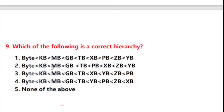Next question: which of the following is the correct hierarchy in computer memory? Answer is option 2: KB, MB, GB, TB, PB, XB, ZB, YB.